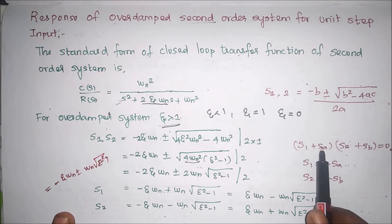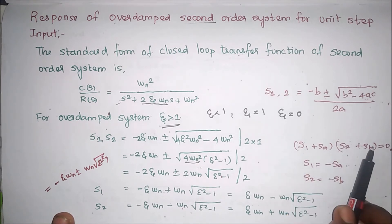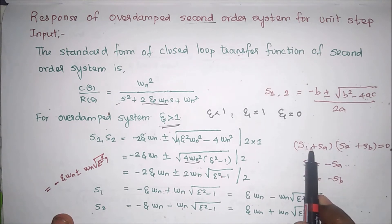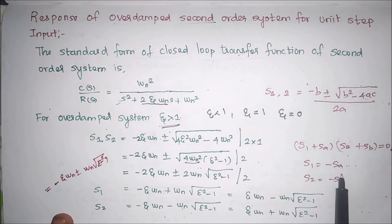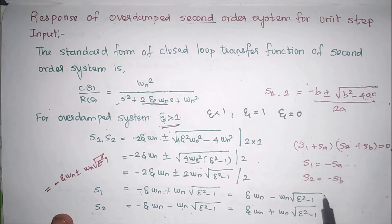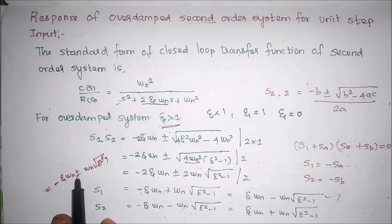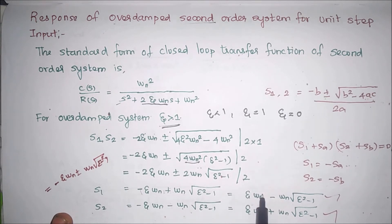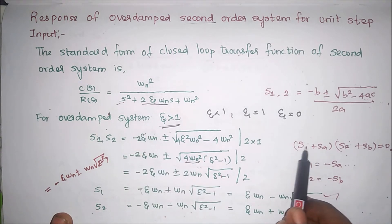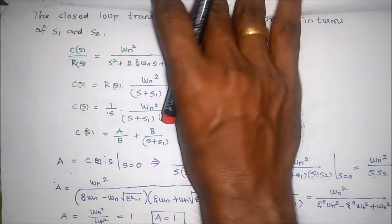We know the characteristic equation can be written as (s + s_a)(s + s_b) = 0. From this, s1 equals minus s_a and s2 equals minus s_b. Therefore s1 equals minus eta*omega_n plus omega_n times square root of (eta squared minus 1), and s2 equals minus eta*omega_n minus omega_n times square root of (eta squared minus 1). So the characteristic equation becomes (s + s1)(s + s2).